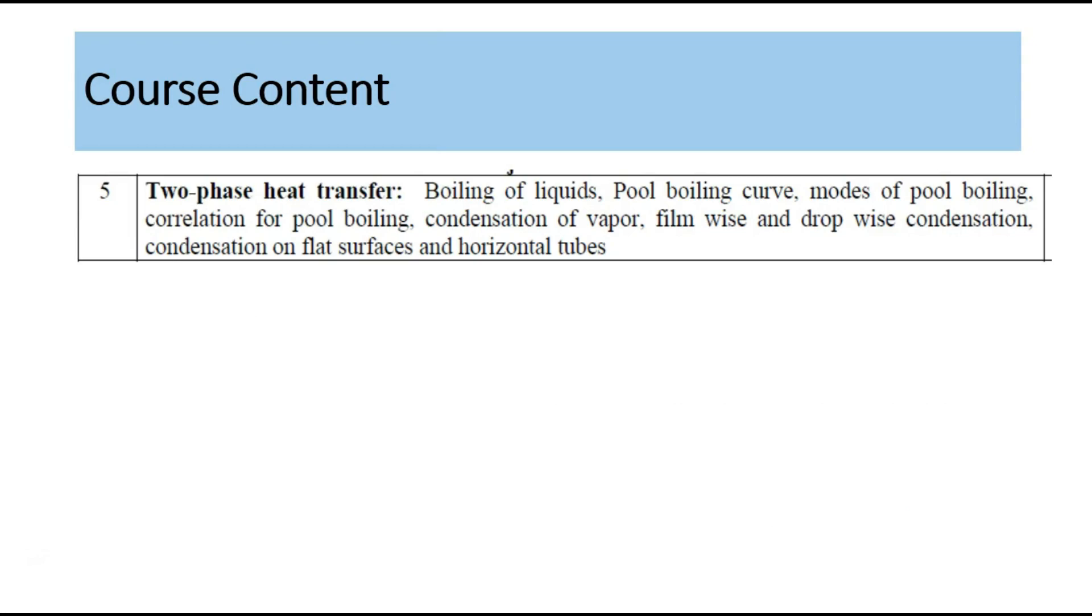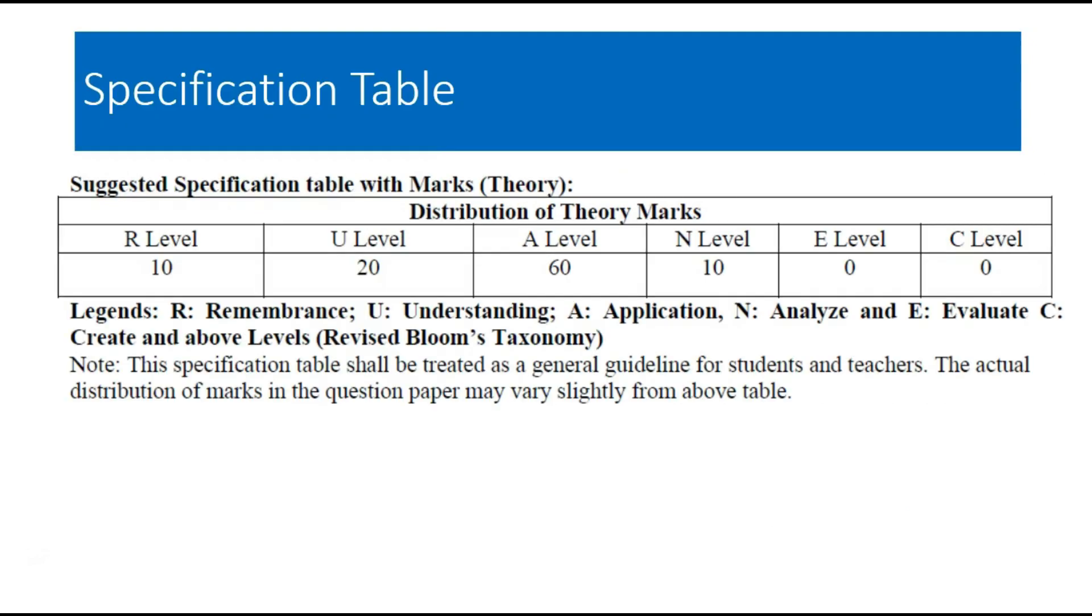So students, if you go in the syllabus and refer the specification table, then here it is given that the remembrance level is only 10 percent, understanding is 20 percent, and the application level is 60 percent, and analyze is 10. It means the question paper of the subject consists of more number of numericals than theory.